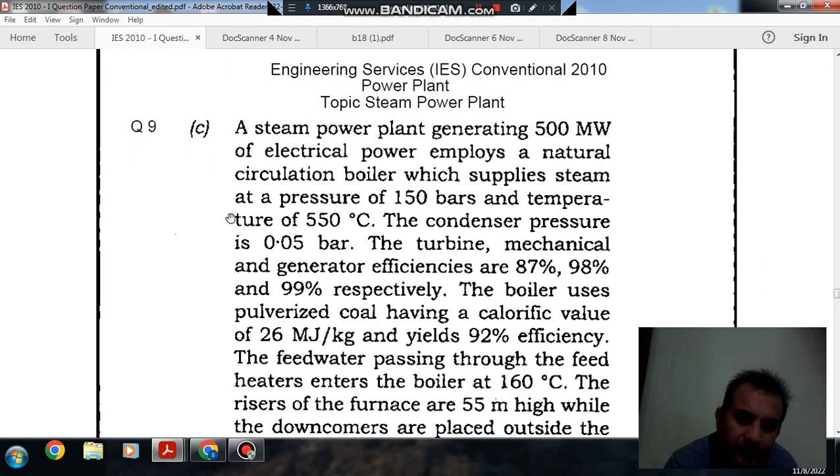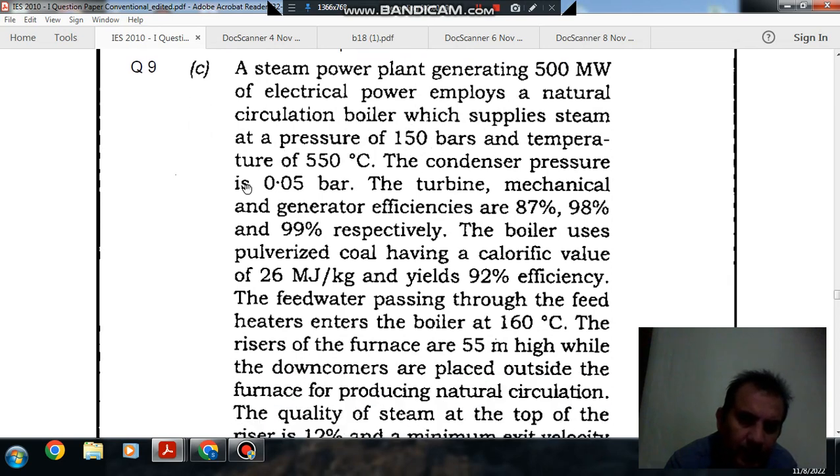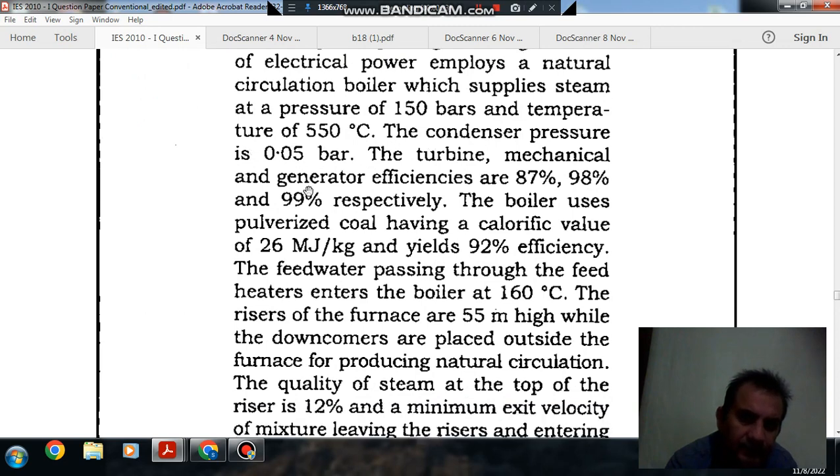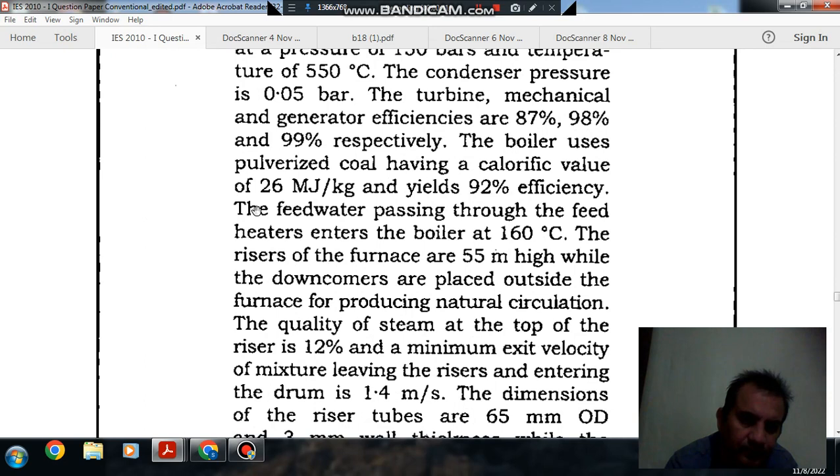A steam power plant generating 500 megawatts of electrical power employs a natural circulation boiler which supplies steam at a pressure of 150 bar and temperature of 550 degree Celsius. The condenser pressure is 0.05 bar. The turbine, mechanical and generator efficiencies are 87%, 98% and 99% respectively. The boiler uses pulverized coal having a calorific value of 26 MJ per kg and yields 92% efficiency.